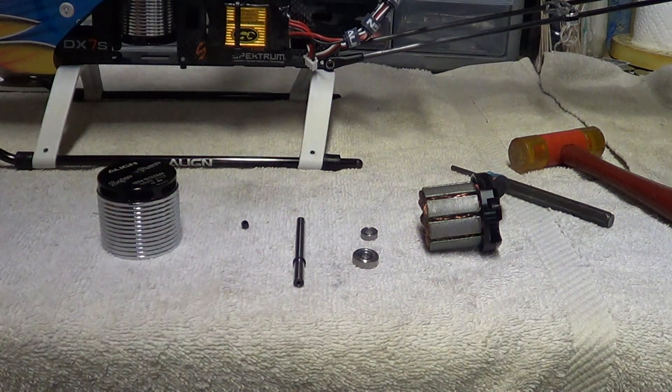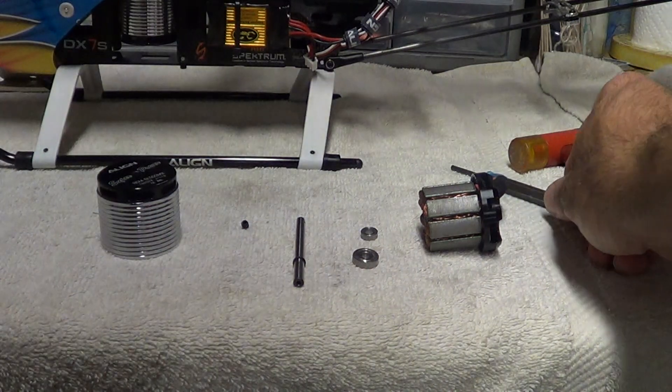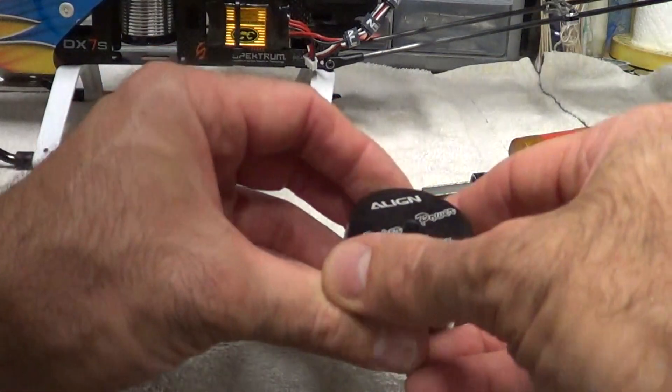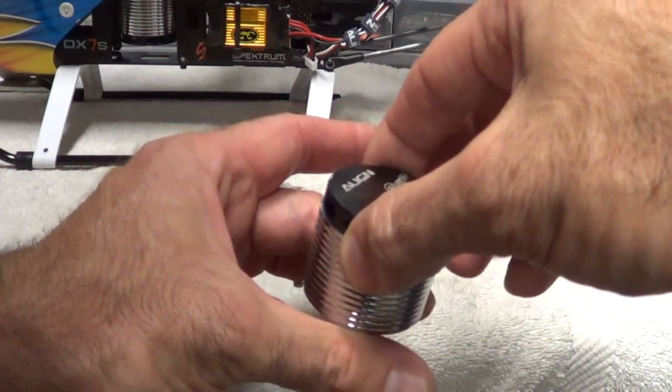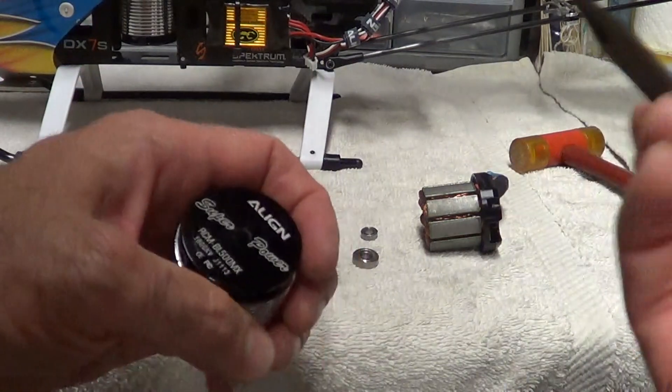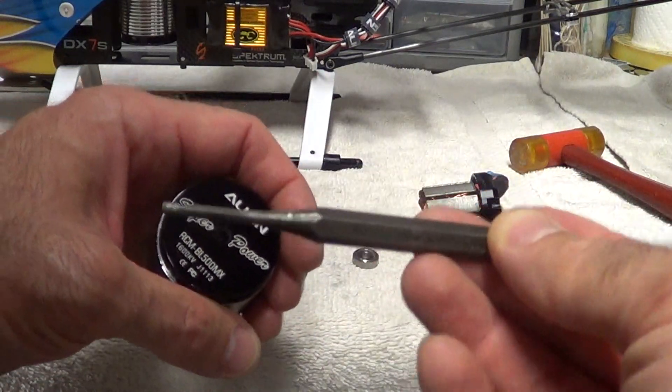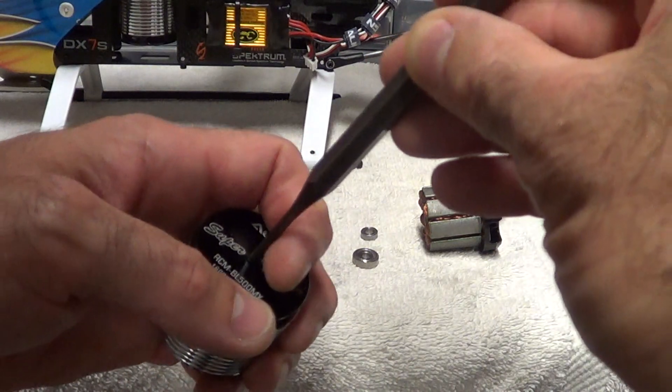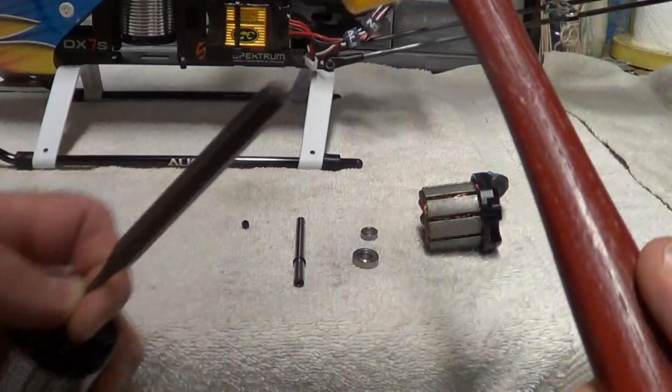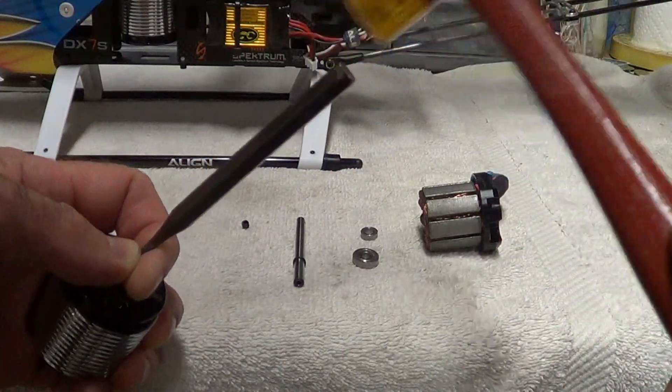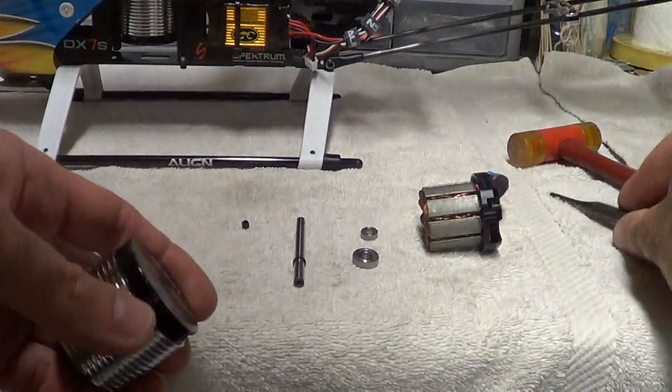Once you got that out, what you want to do is, couple of ways you can do it. You can prop this up so it's on two boards. I don't even bother doing that. It's not that hard to get apart. Get yourself a punch like this and just insert it where the shaft is. Take a plastic hammer or rubber mallet and just a few taps, that's it.